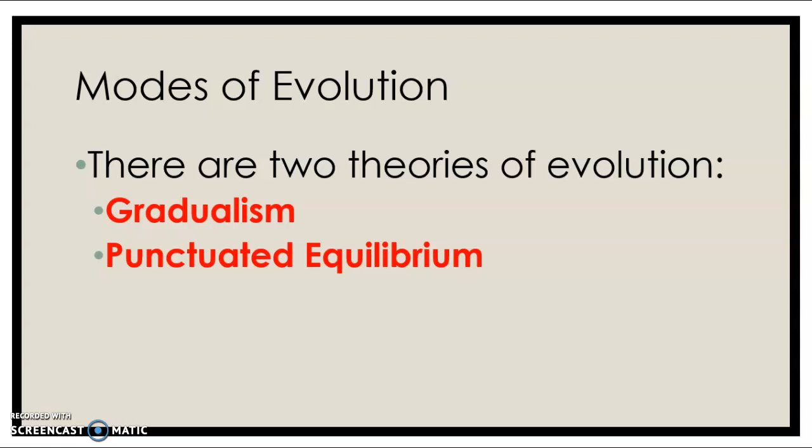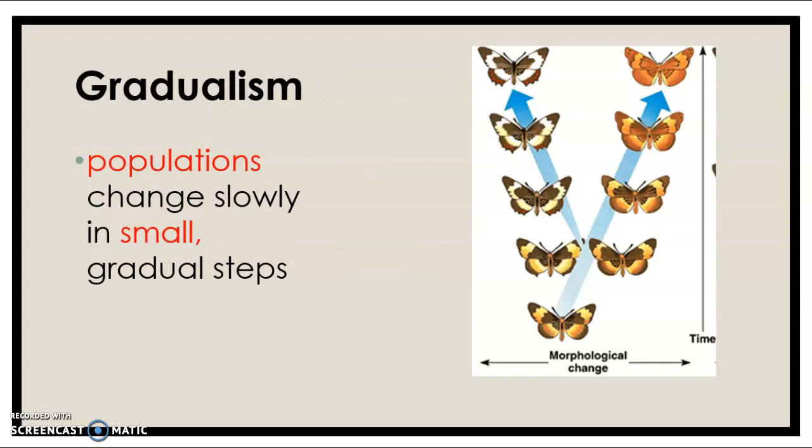Gradualism is a mode of evolution that takes quite a long, slow, methodical period of time, where these populations are going to slowly change over gradual steps over extremely long periods of time. This is really similar to exactly how we've been describing evolution from the start. One species of butterfly slowly evolved into two different species, and at the end those are two separate species because they can no longer reproduce with each other.